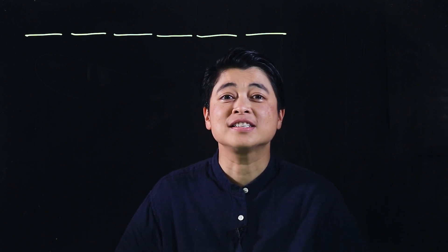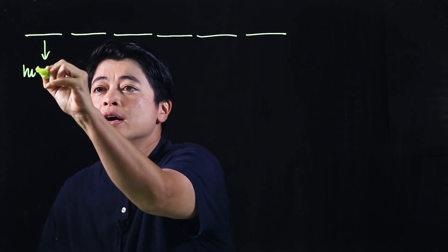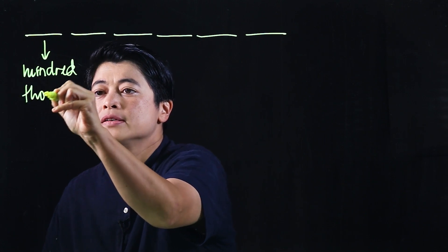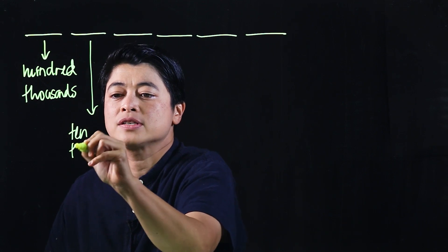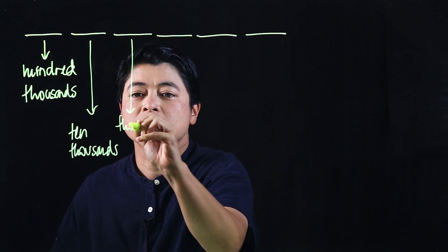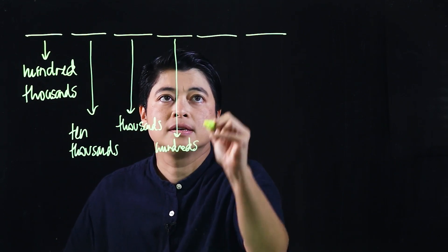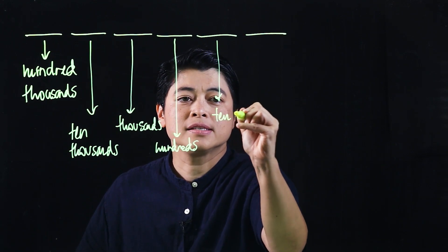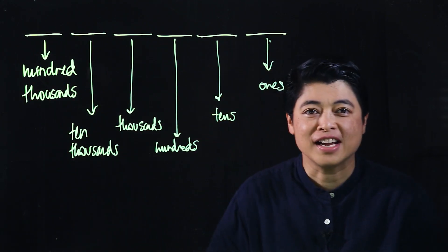We will be doing numbers up to 10 million. In past years we've been writing down the place values. The first place value here is hundred thousands, then ten thousands, then thousands, then tens, and ones. You may wonder why there's no millions — because after the hundred thousands comes the millions.